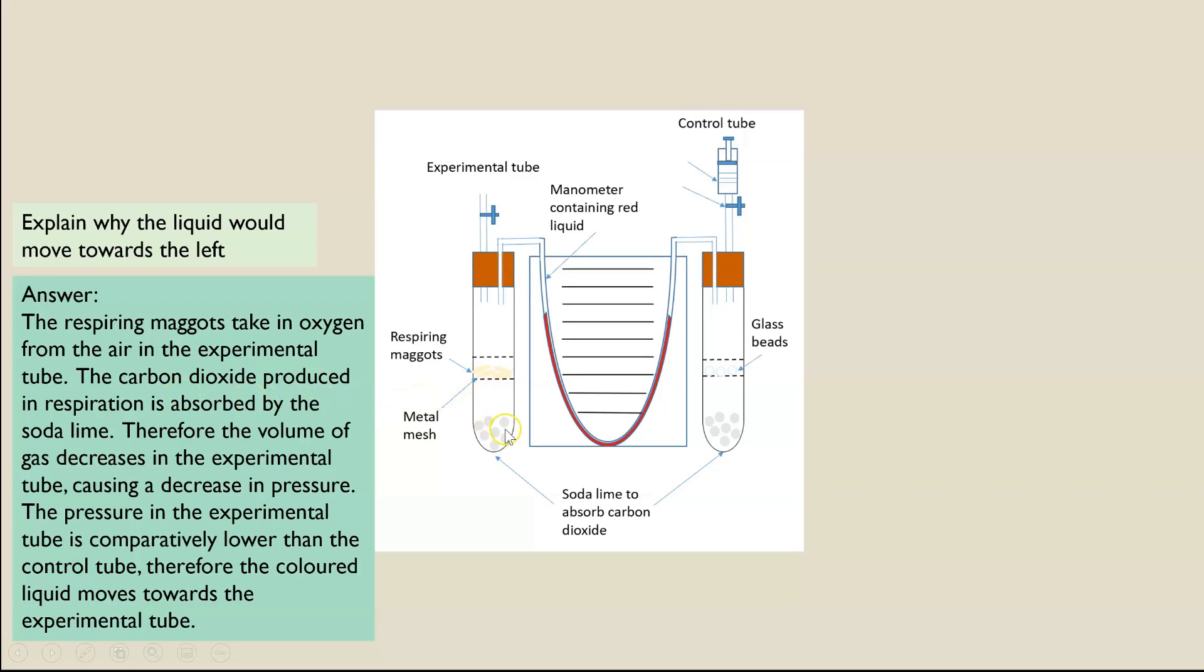Carbon dioxide which is produced will be absorbed by the soda lime, so we'll end up with a decrease in volume in the experimental tube. That will cause a decrease in pressure. Comparatively, the control tube has a higher pressure now compared to this lower pressure in the experimental tube. Therefore, it's going to force that liquid, that colored liquid, around towards the experimental tube.